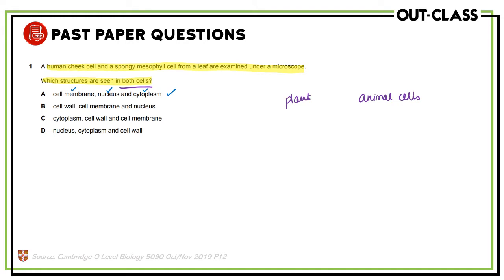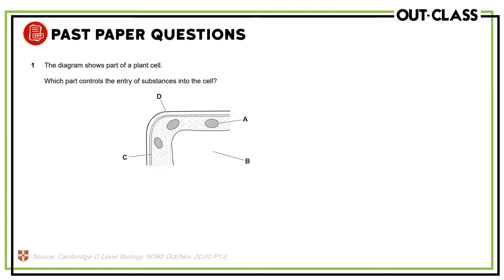Option B says cell wall — straight away you know that the cell wall is not found in animal cells, so this is incorrect. Option C says cytoplasm and again cell wall, which is not found in animal cells. Option D also mentions cell wall. Cell wall is found only in plant cells; it is not found in animal cells. So the answer is A, because cell membrane, nucleus, and cytoplasm are found in both animal and plant cells.